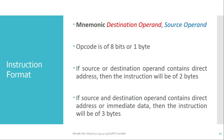The opcode for the 8051 is 8 bits — that is, one byte. To form an instruction we need an opcode plus the source and destination operands. If the source or destination operand contains a direct address, the instruction will be two bytes: one byte for the opcode and one byte for the direct address operand.